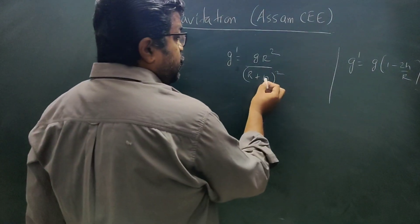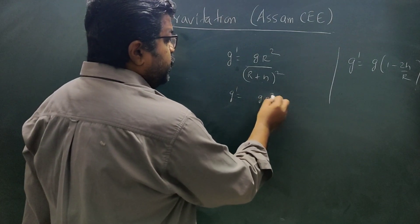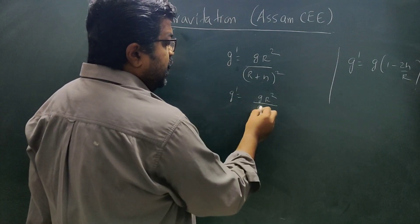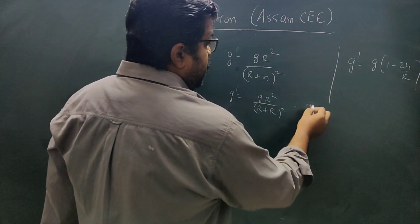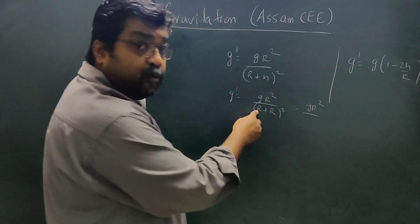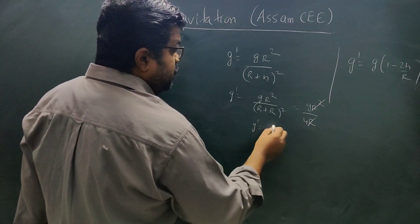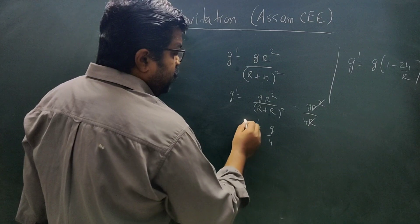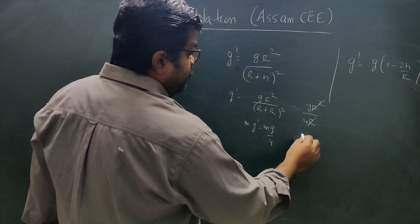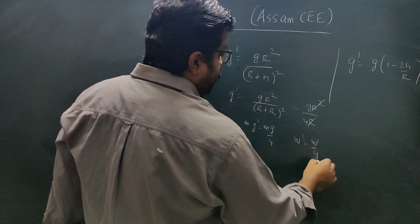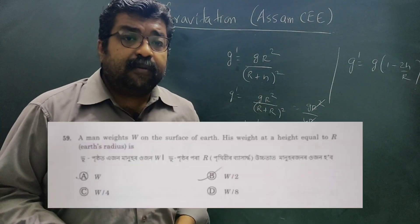Since h equals R, we substitute into the exact formula: g' equals g R squared divided by (R plus R) squared, which equals g R squared divided by 4R squared, giving g' equals g divided by 4. Multiplying both sides by mass m: m g' equals m g divided by 4. Therefore W' equals W divided by 4. The answer is one-fourth of W.